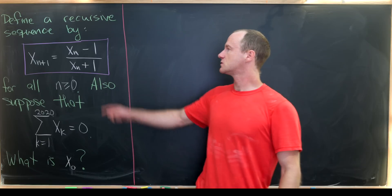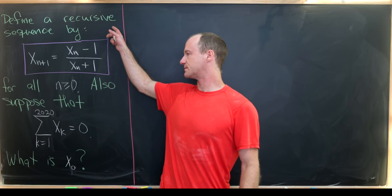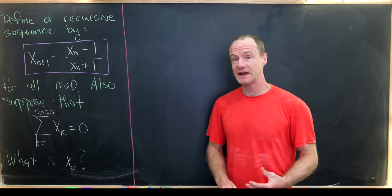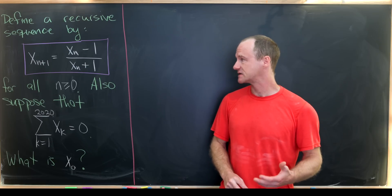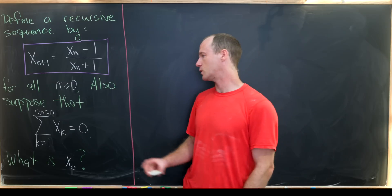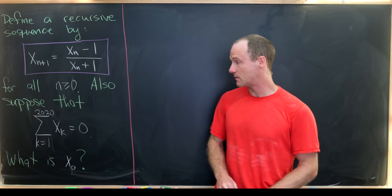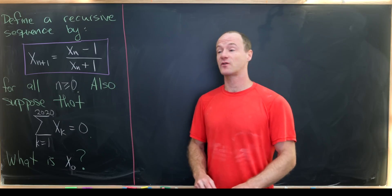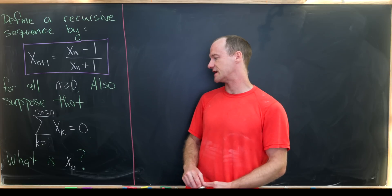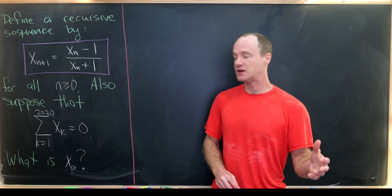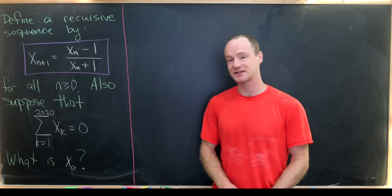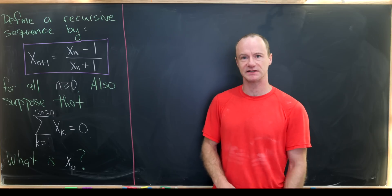So let's define a recursive sequence by x_{n+1} equals x_n minus 1 divided by x_n plus 1, for all n greater than or equal to 0. Also, we want to suppose that the sum of the first 2020 terms equals 0 — in other words, the sum as k goes from 1 to 2020 of x_k is 0. Using those two pieces of information, our goal is to determine what x_0 must be.